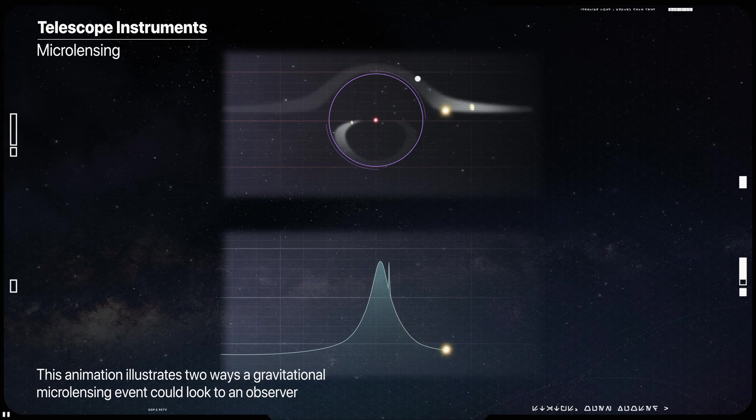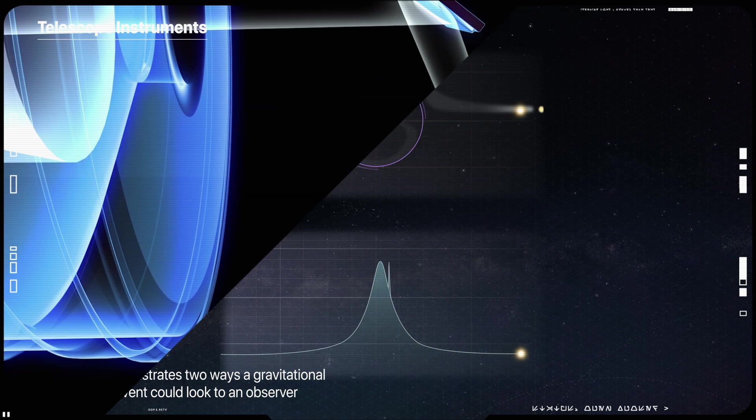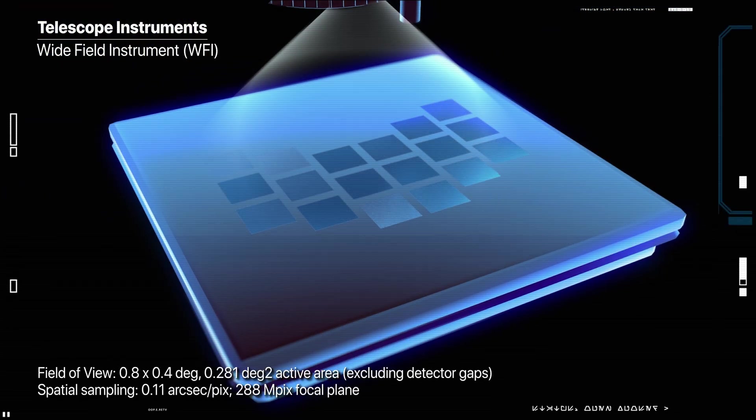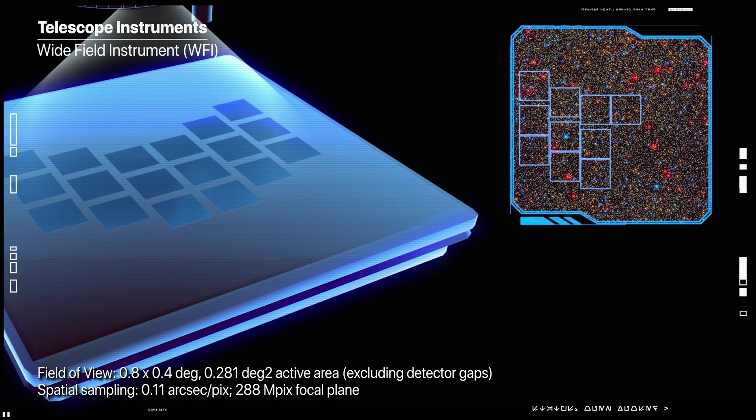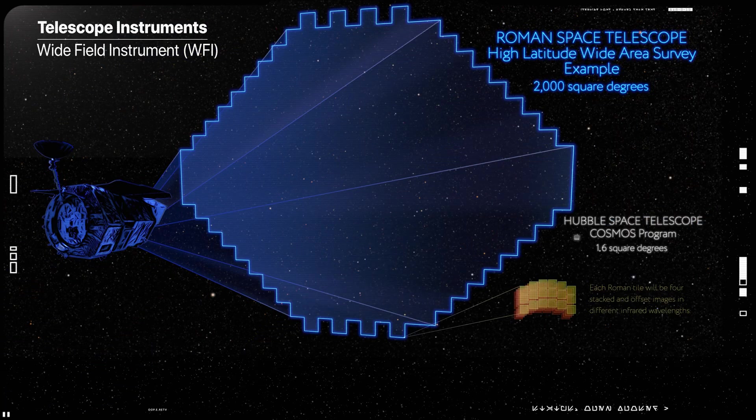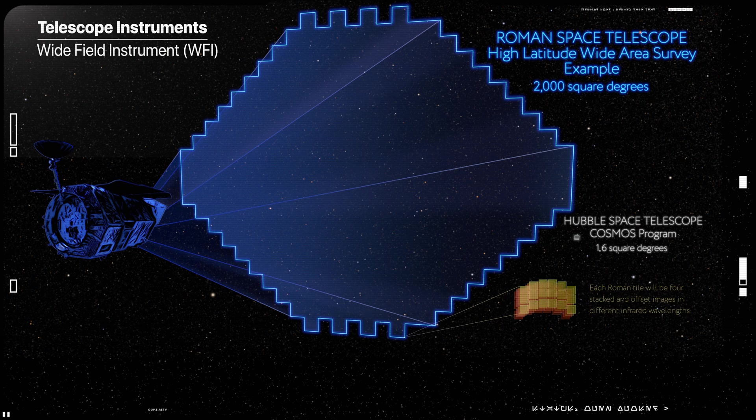The Wi-Fi is a 288-megapixel multiband near-infrared camera, providing a sharpness of images comparable to that achieved by the Hubble Space Telescope over a 0.28-square-degree field of view.